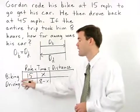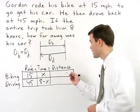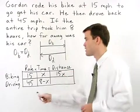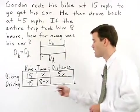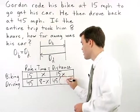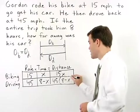So his distance biking would then be 15 times x, or 15x, and his distance driving would be 45 times 8 minus x, or 45 times parenthesis 8 minus x.